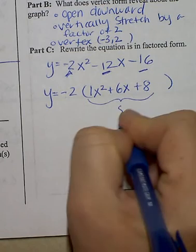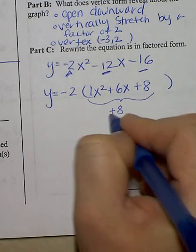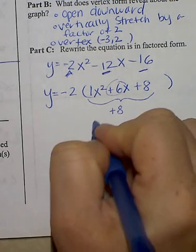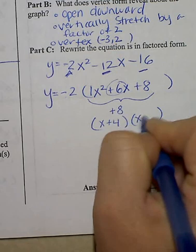1 times 8 is 8. So I'm thinking of two terms that multiply to equal 8 and combine to give you 6. And that would be x plus 4 and x plus 2.